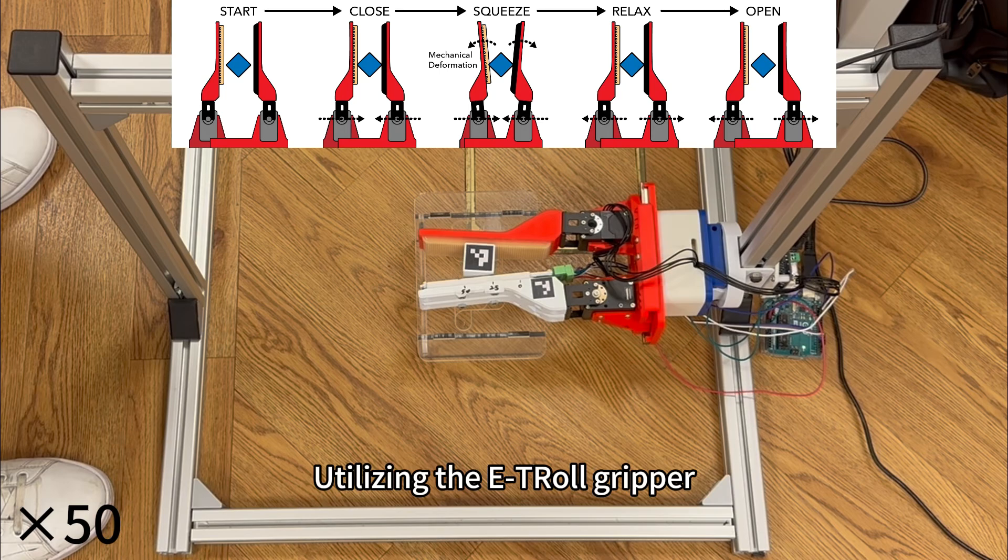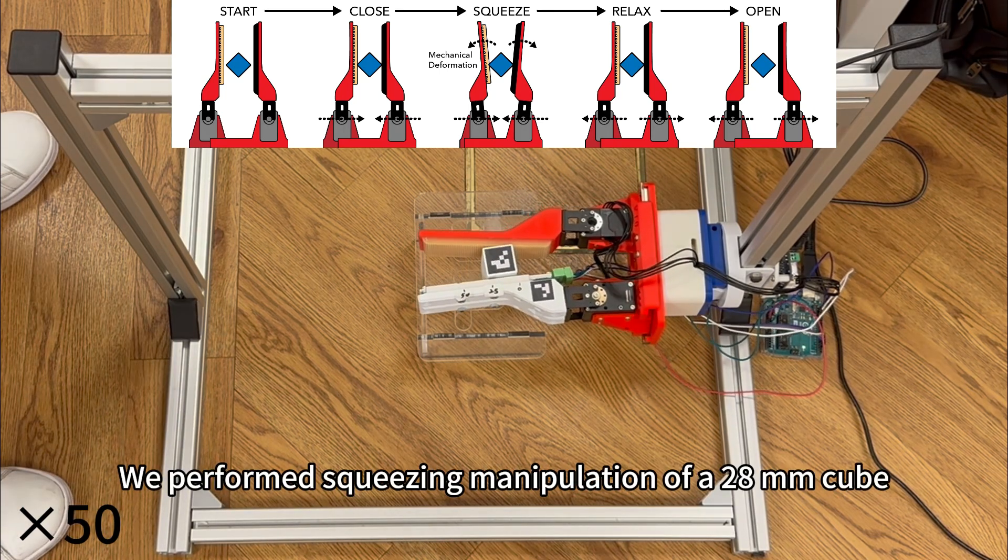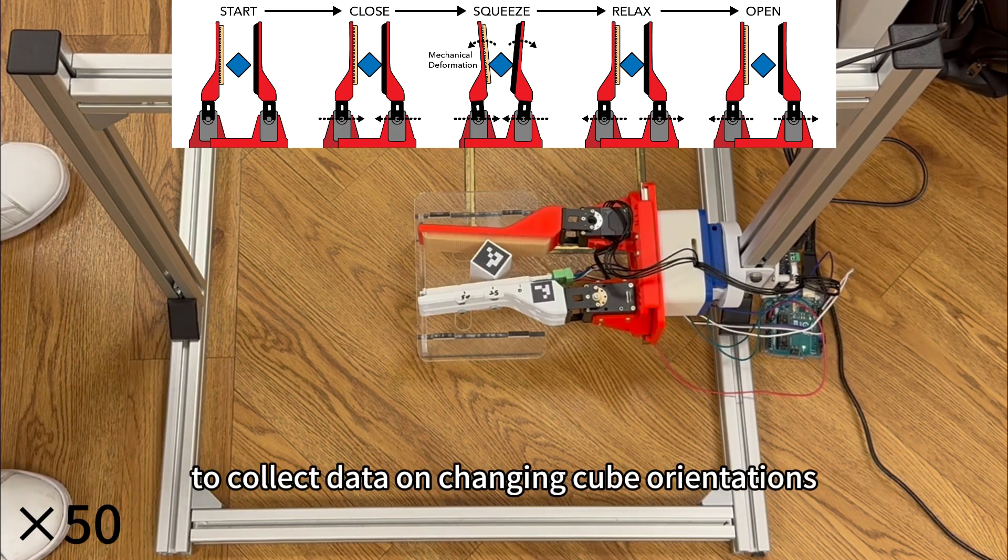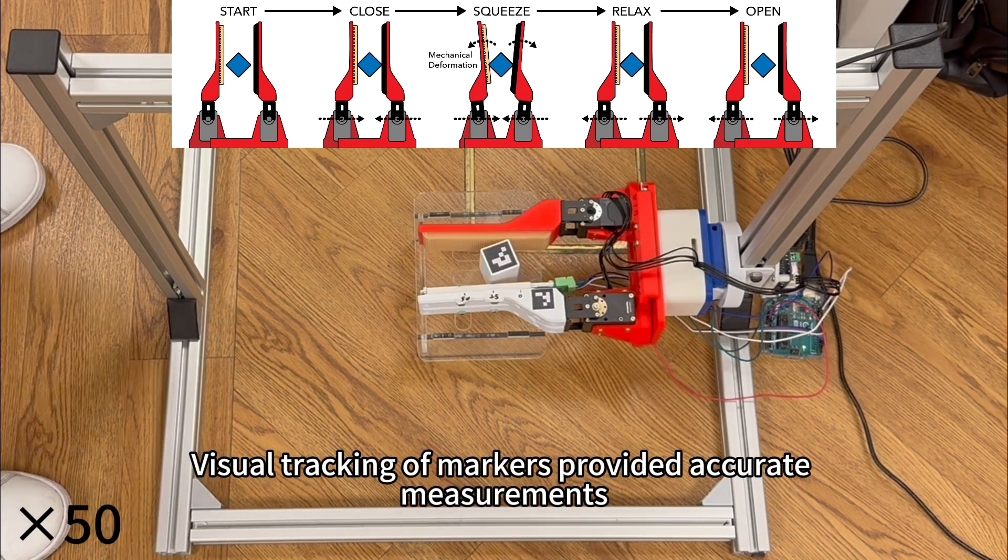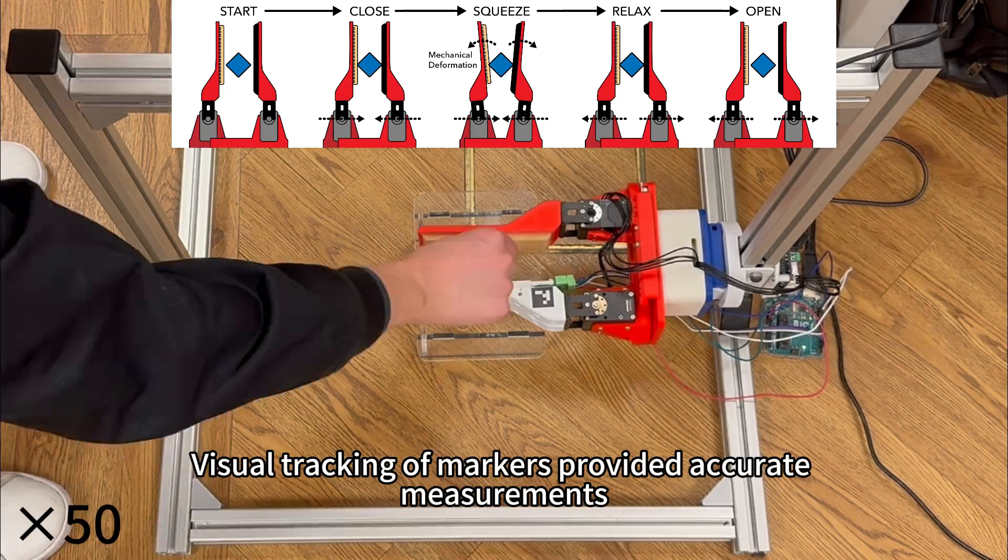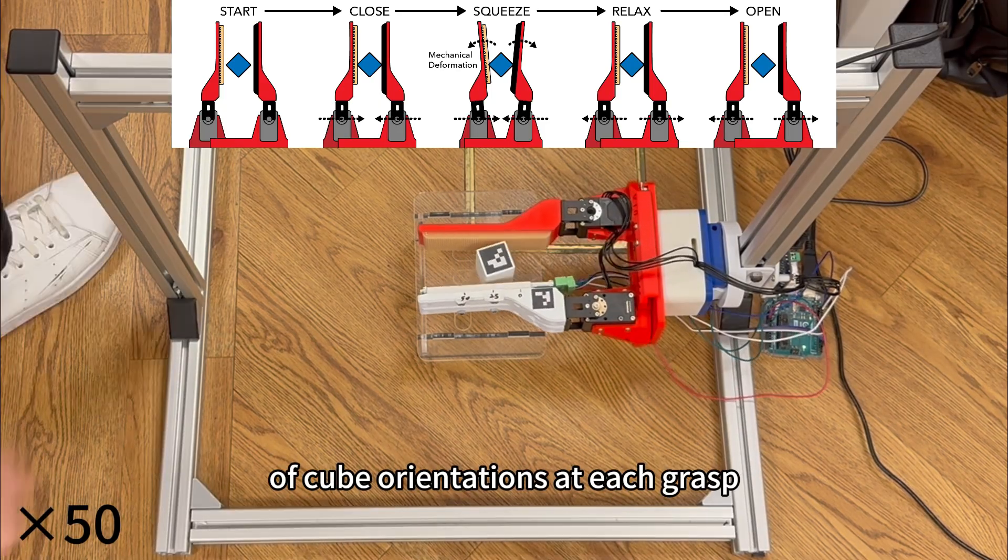Utilizing the ECHO gripper, we perform squeezing manipulation of a 28 mm cube to collect data on changing cube orientations. Visual tracking of markers provides accurate measurements of cube orientations at each grasp.